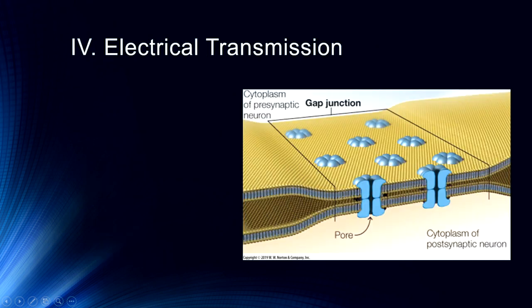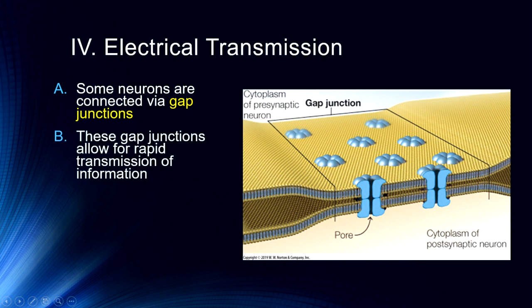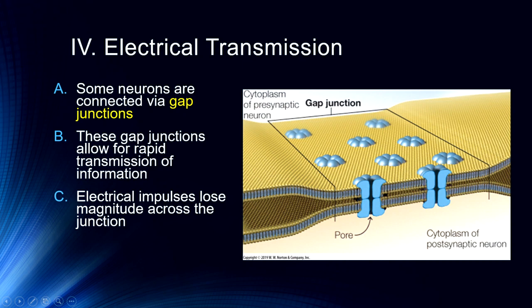Finally, I want to finish up with electrical transmission. Some neurons are connected via what we call gap junctions, which allow for rapid transmission of information. Rather than releasing chemicals into a synapse, the electrical signal just continues across this gap junction. Importantly, these electrical impulses lose their magnitude as they cross the junction — they might go from being an action potential to just being an EPSP. Also important: information can travel in both directions, meaning neurotransmission can back-propagate to the previous neuron. We probably won't spend a lot of time talking about these, but it's important to understand that they exist. That is neurotransmission — we will be looking at brain and neural anatomy and nervous systems in the next series of lectures.